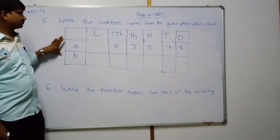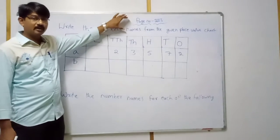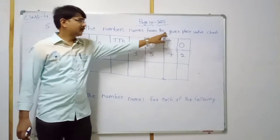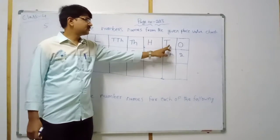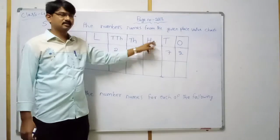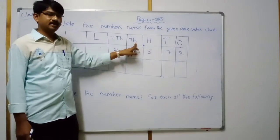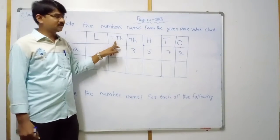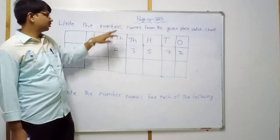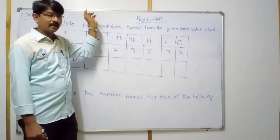Just look here — places are given, and already we learnt the periods. Ones period includes hundreds, tens, and ones. Thousands group includes thousands and ten thousands. Lakh group includes lakh and ten lakhs.